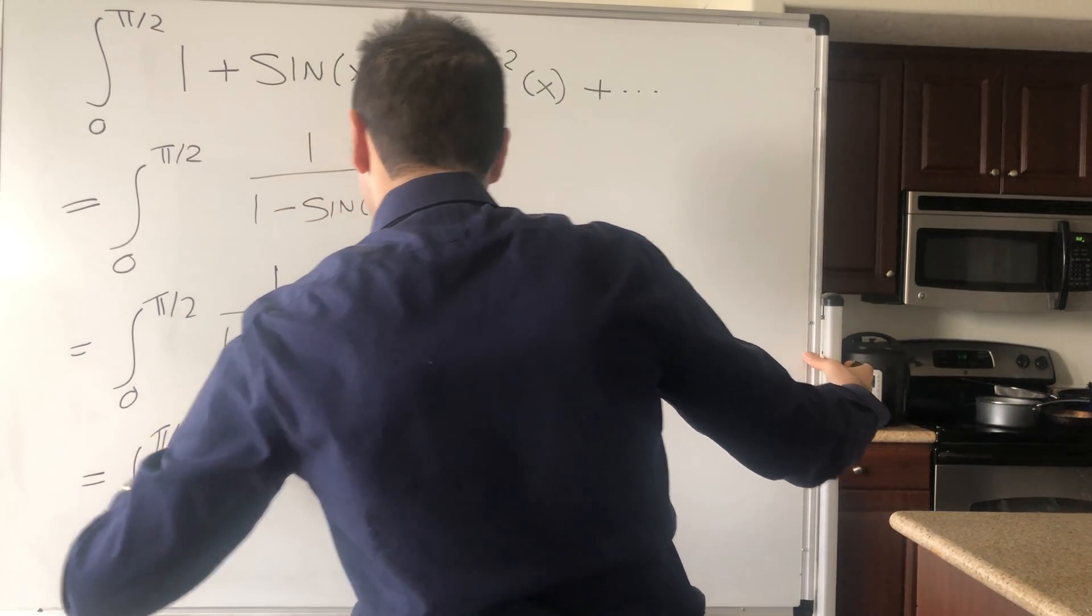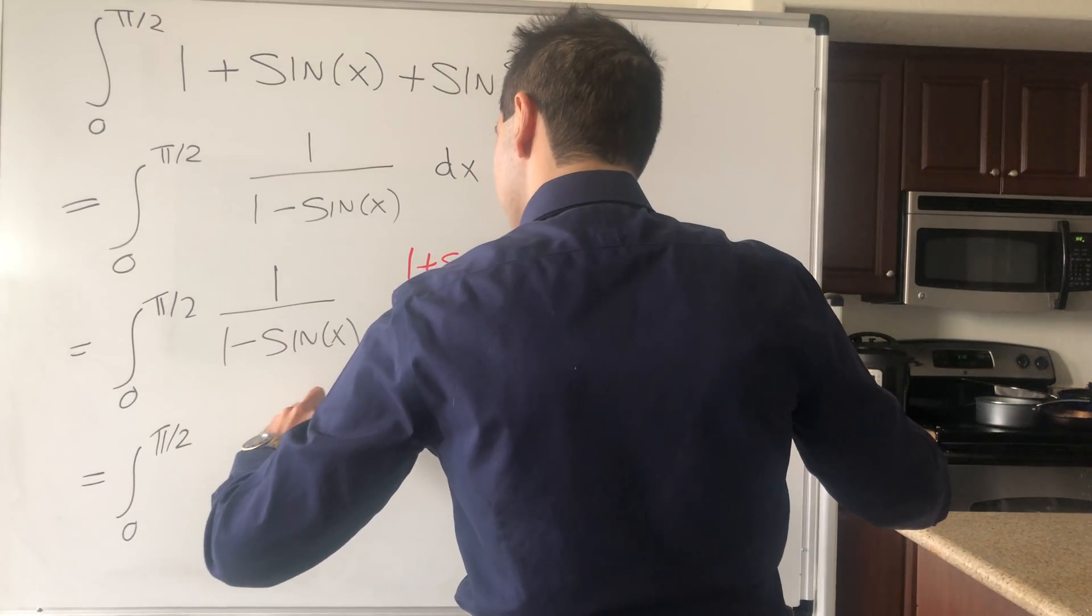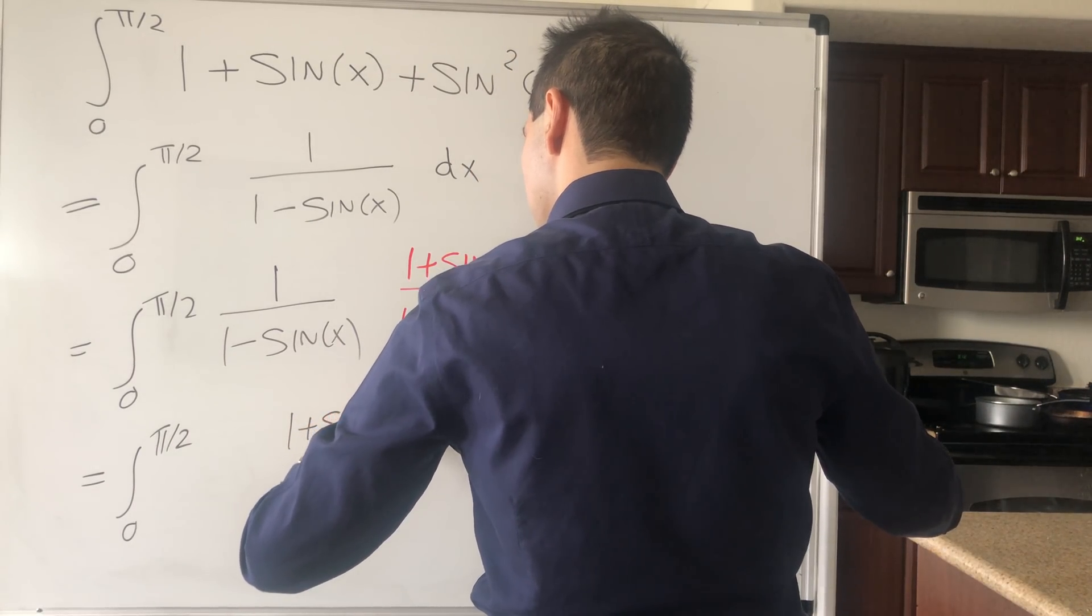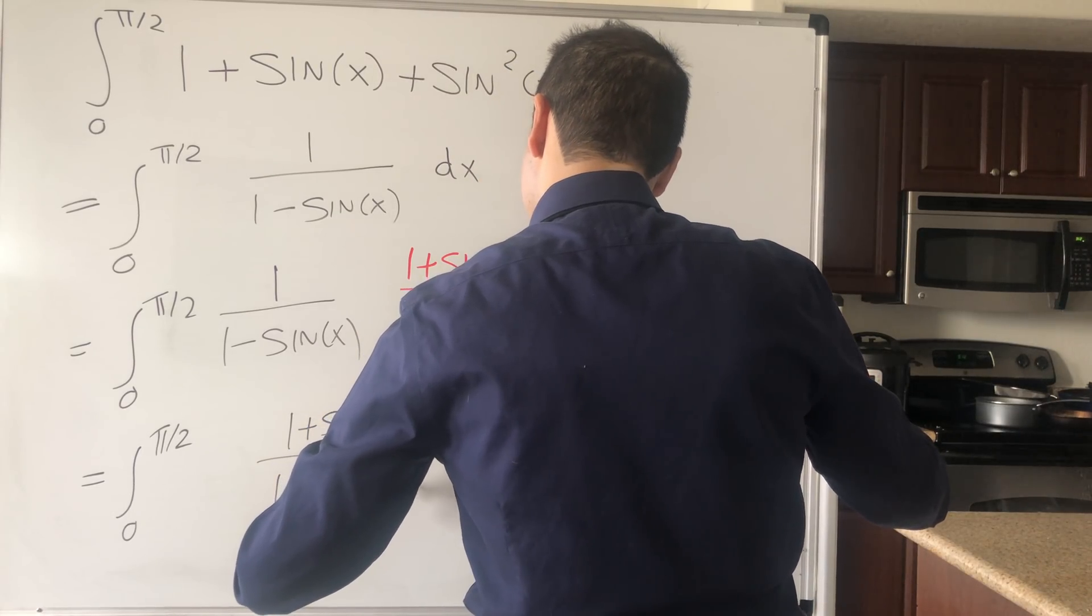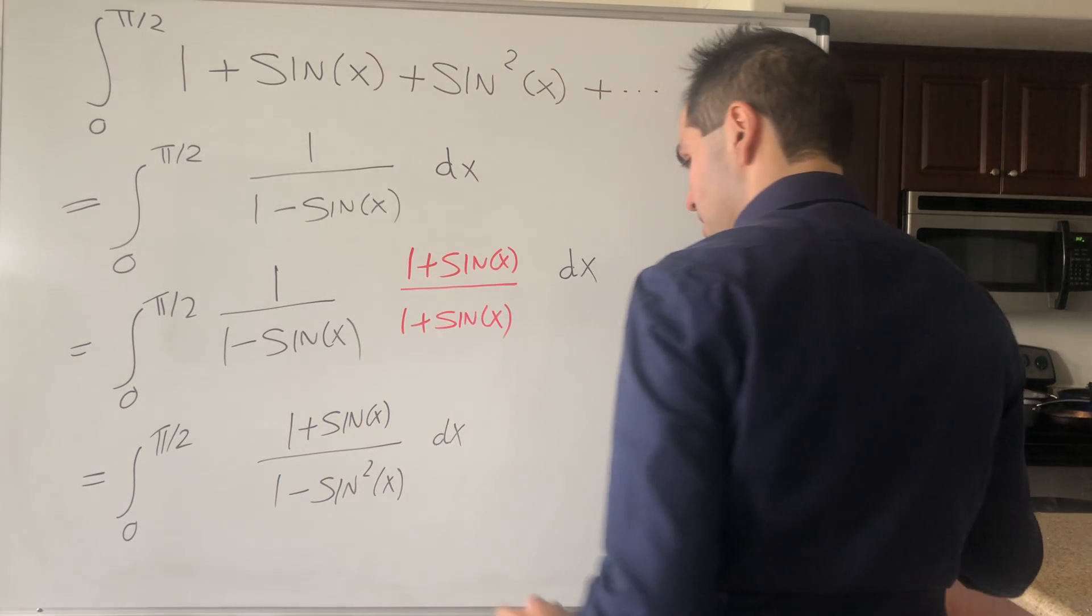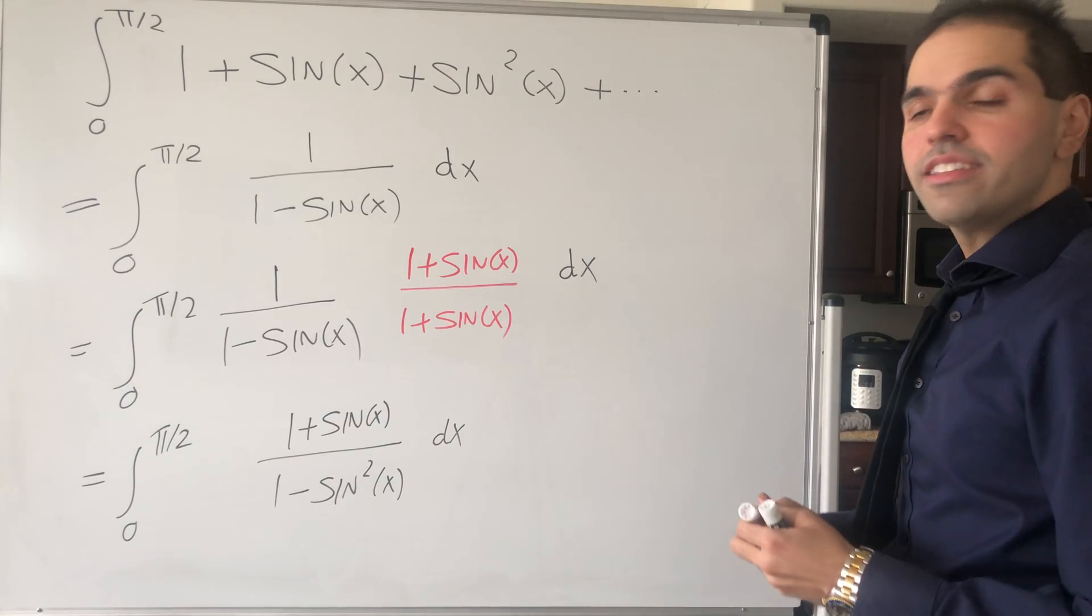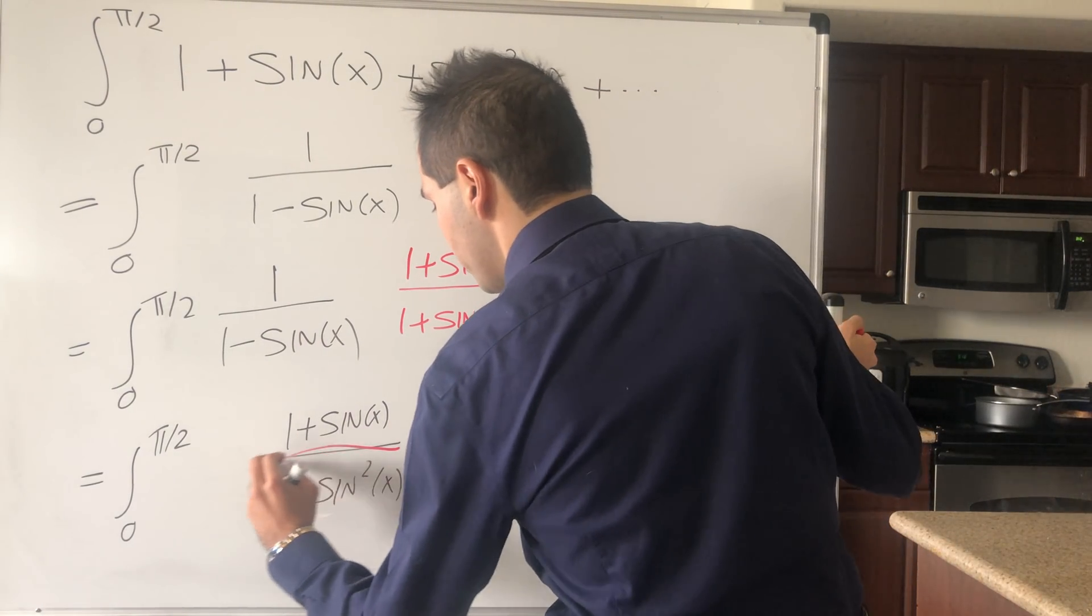What this becomes is the integral from 0 to π/2 of (1 + sin(x))/(1 - sin²(x)) dx, but 1 - sin²(x) is just cos²(x).